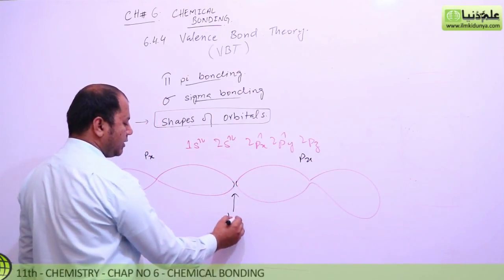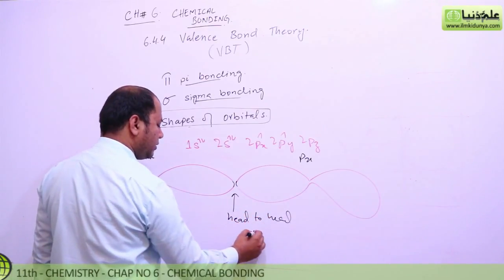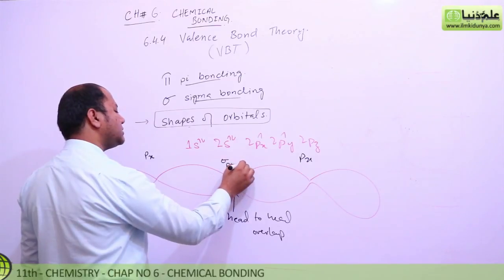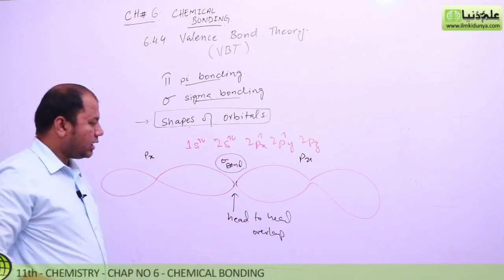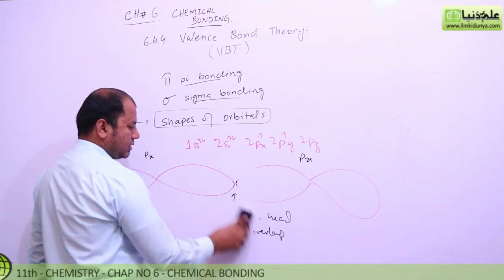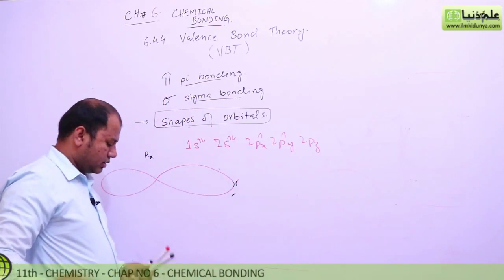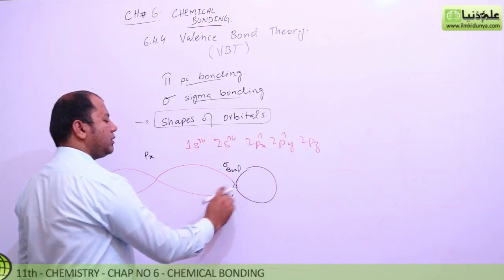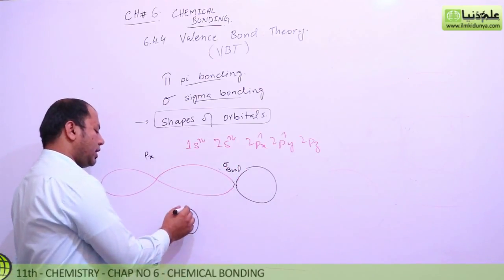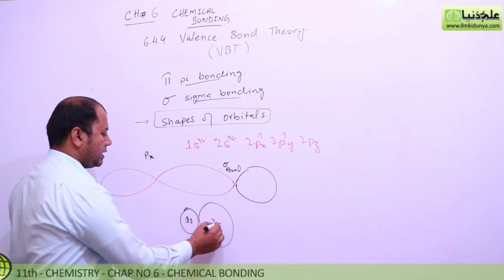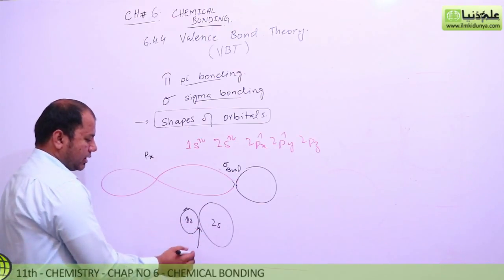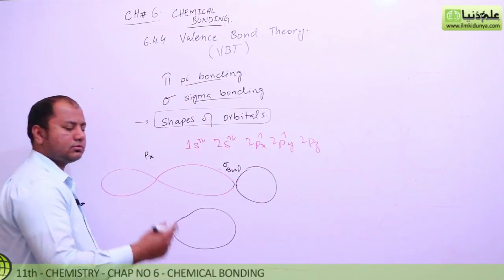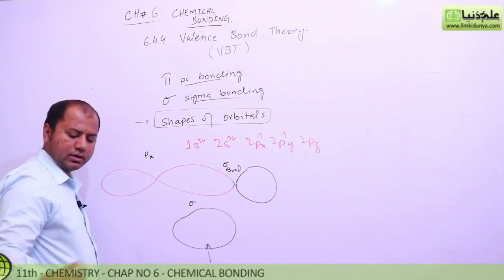This is called head-to-head overlap, which is called a sigma bond. Beyond that, px can overlap like this - s overlapping with s - that is also a sigma bond. Why? Because here is head-to-head overlap. If we have one s and a bigger 2s orbital overlapping head-to-head, it forms a new shape.